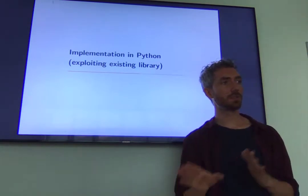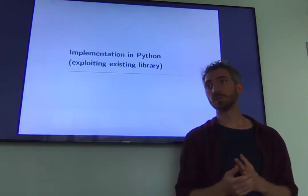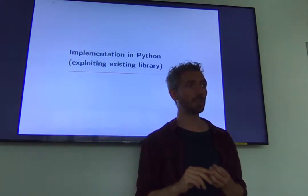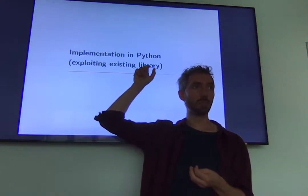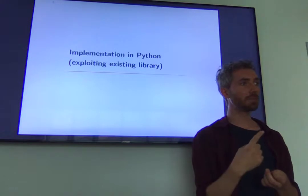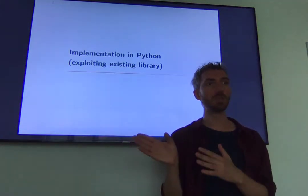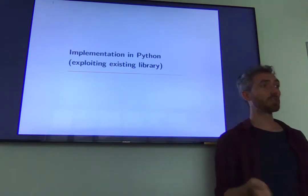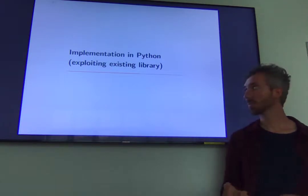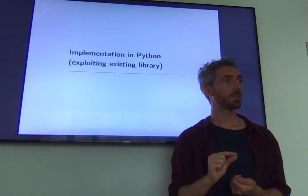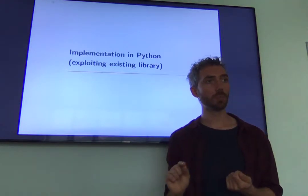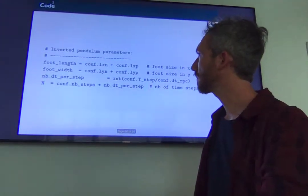That's it for the theory on trajectory optimization for the center of mass. What we're going to see now is the implementation exploiting an existing Python library. Contrary to TSID, this library is pure Python — it's not C++ with Python bindings. It uses a C++ QP solver with Python binding, so the resolution of the optimization problem is still in C++, which is why it's fast, but all the problem formulation is in Python. So it will be easier for you to go inside and see the details of implementation. I'll show you the main points of the script on slides and then we'll go to the virtual machine.